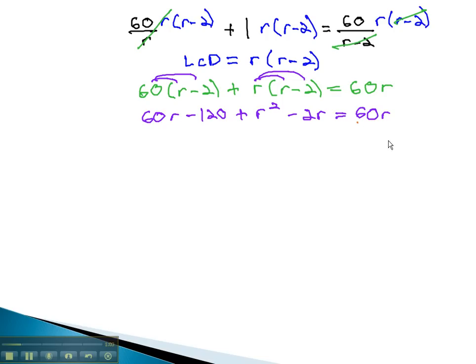As we continue to solve, you may notice we have 60r on both sides of the equation. This is nice, as when we subtract 60r from both sides, they'll subtract out completely.